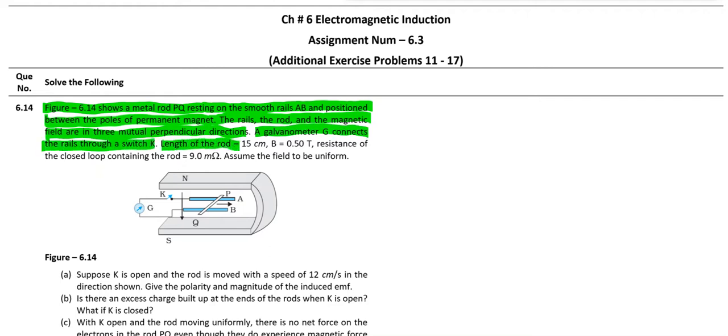Length of the rod is 15 cm, magnetic field strength is 0.5 tesla, resistance of closed loop including rod is 9 milliohms. Assume the field is uniform.